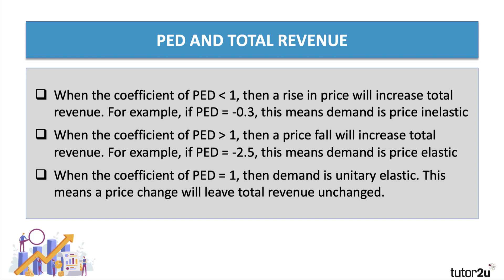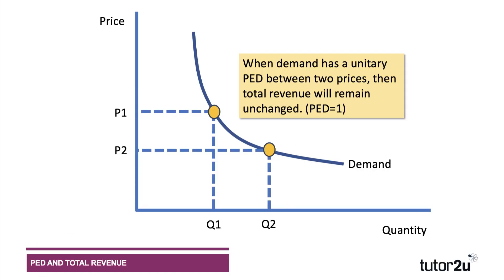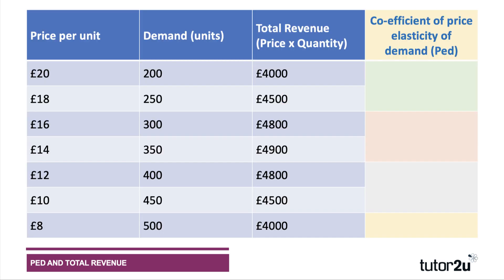When the coefficient is equal to one, we say that demand is unitary elastic. That means any price change around that point will leave revenue unchanged. On a unitary elastic demand curve, any price change between P1 and P2 causes a proportionate change in quantity — the two areas should be the same size, leaving total revenue unchanged.